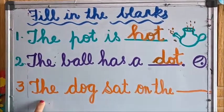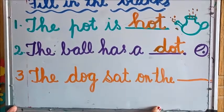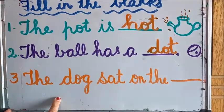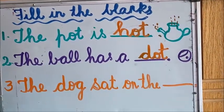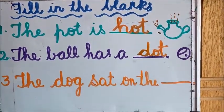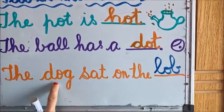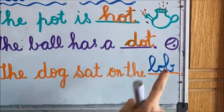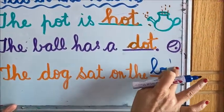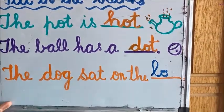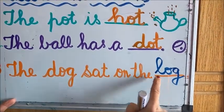Now the last one — read this: the dog sat on the dash. No picture is given. Try to remember which picture teacher showed you. The dog sat on what? The dog sat on the log. Now see whether I am writing correctly. Let me read it: the dog sat on the log. Did I write correctly? No. That is the reason you must read after writing. When you read, you will understand that you have written wrong. Log. Now read: the dog sat on the log.